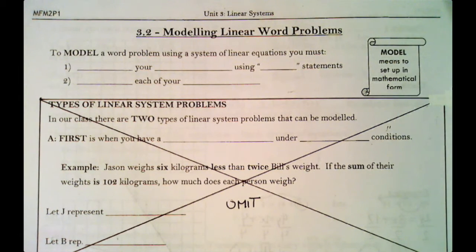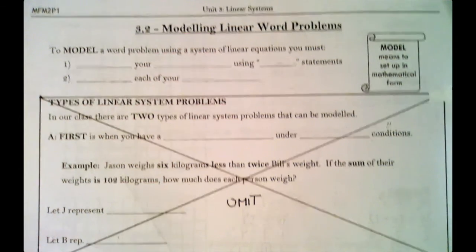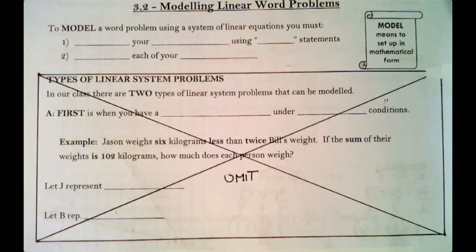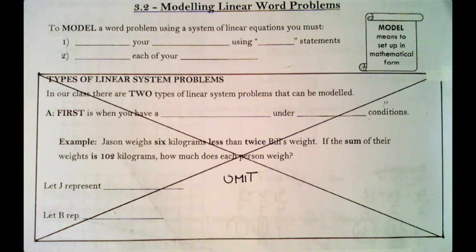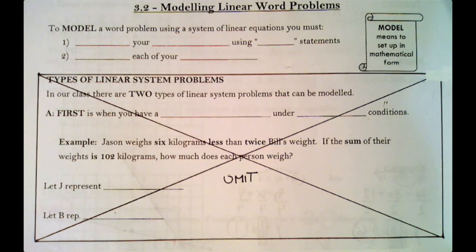Okay, this is lesson 3.2, modeling linear word problems. If you'll notice, there's a huge box here with a section crossed out that says omit. We're actually only going to look at one type of word problem in this unit just to lighten the load. We will revisit word problems again, but not in this unit. So every question from this point forward is just going to focus on the one type of word problem.